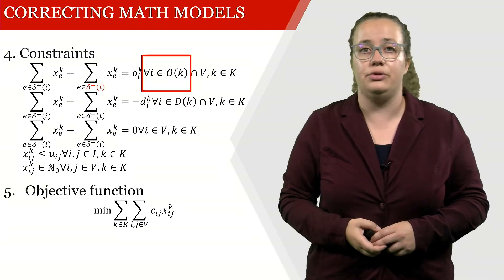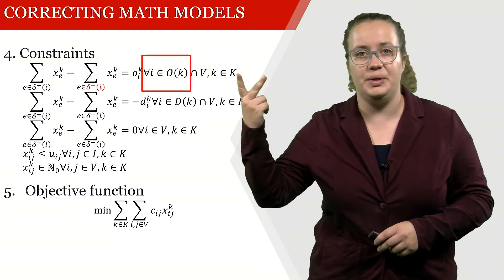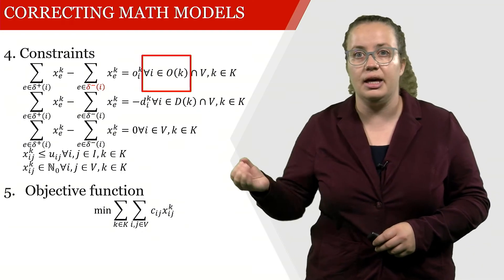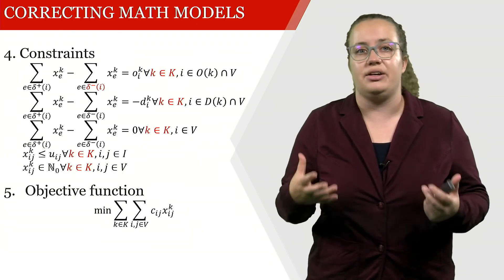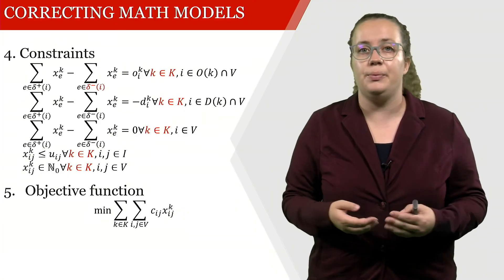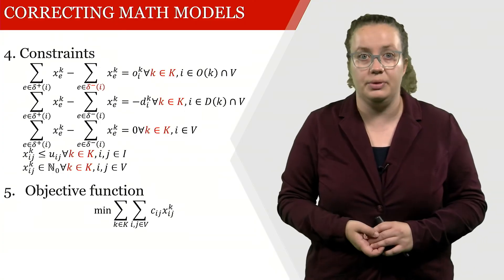So what we have to do is we have to switch this. We first have to define k and then we can use o(k). So we're changing this actually everywhere because everywhere it could possibly be relevant.